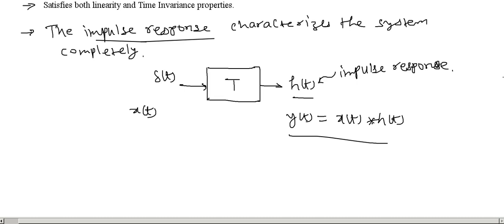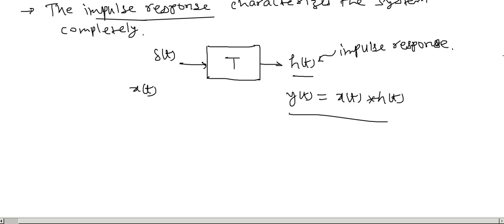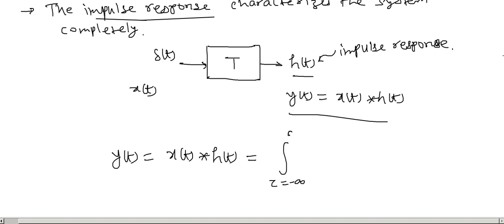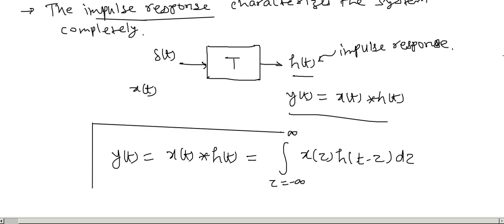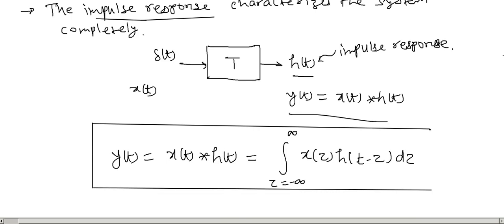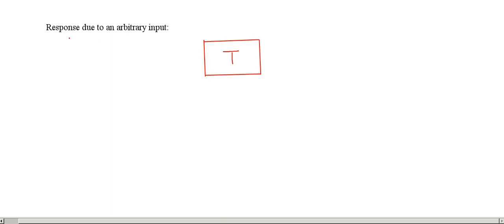This symbol is used for convolution. It is given by Y of t equal to X of t convolved with H of t, which is equal to the integration over tau from minus infinity to plus infinity. This is the formula of convolution. Now let us formally derive the response due to an arbitrary input — that is, convolution — for this LTI system.